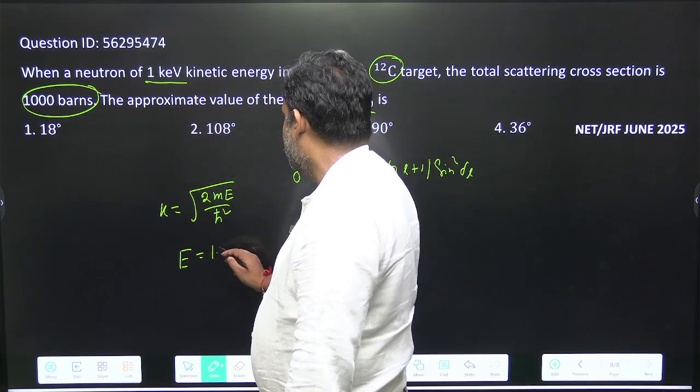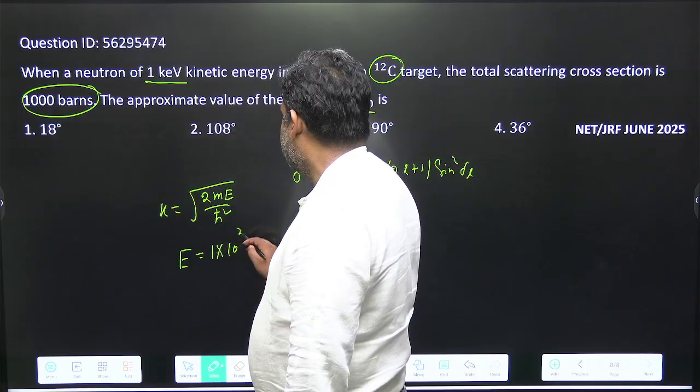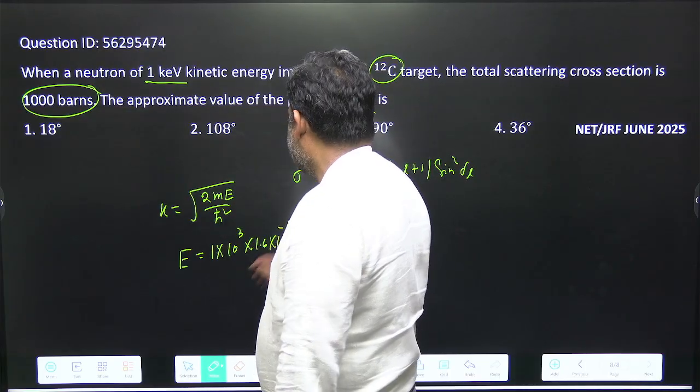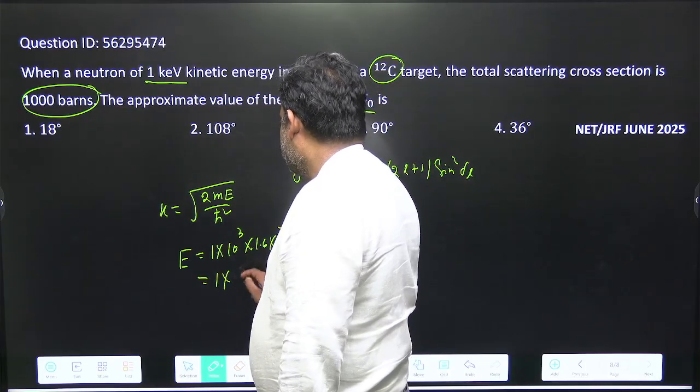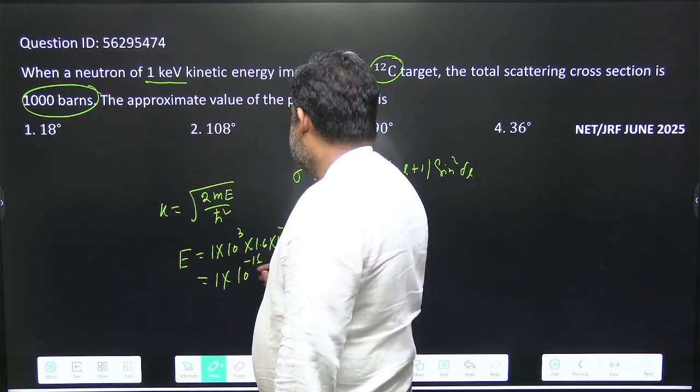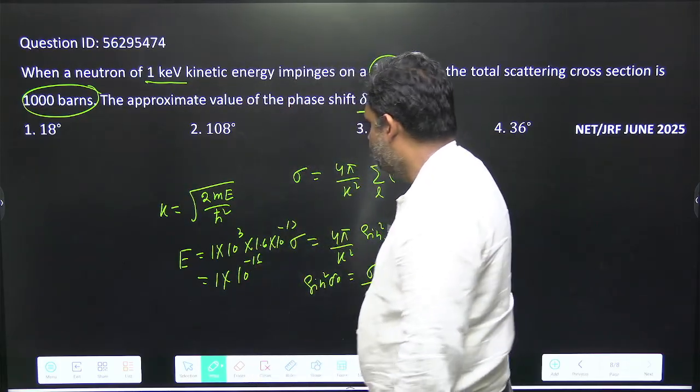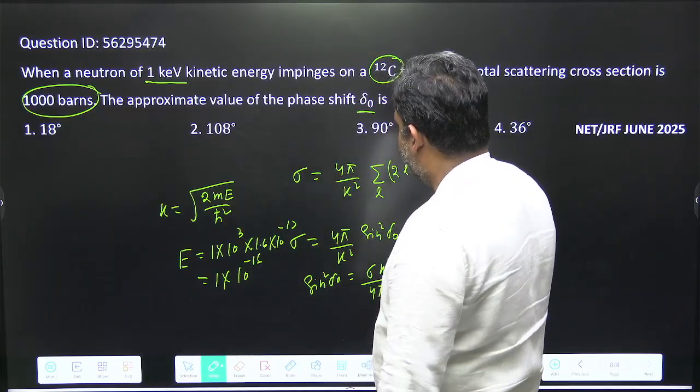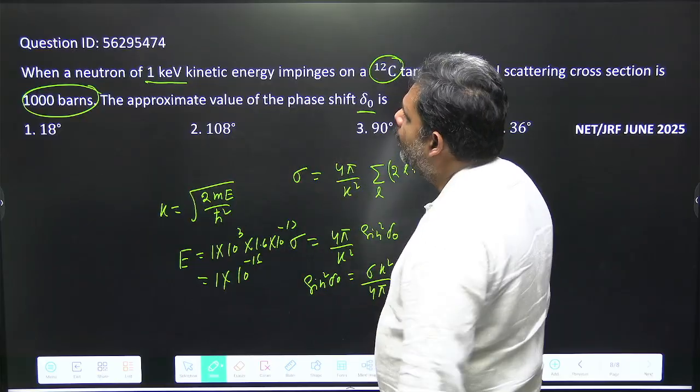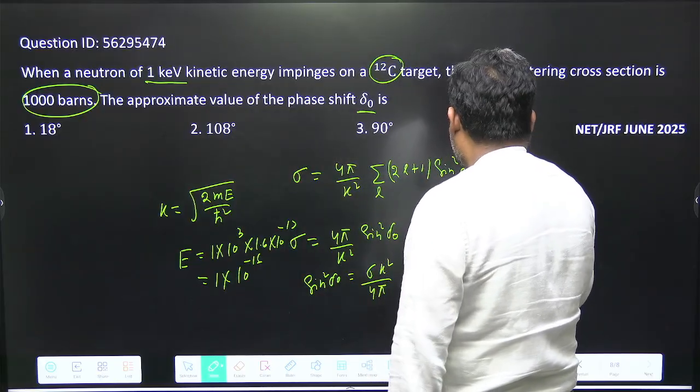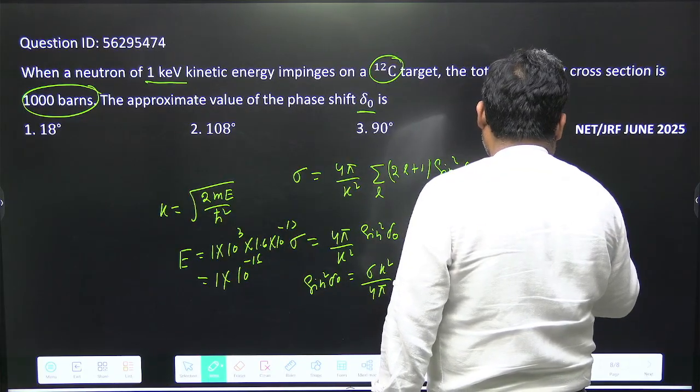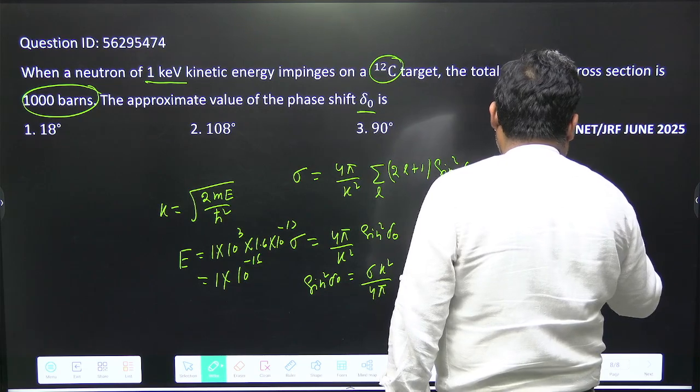This is 1 kiloelectron volt, so 1×10³×1.6×10⁻¹⁹. So this is 1.6×10⁻¹⁶ joules. This is the value of energy and we can put the value of energy. Sigma is 1000 barns. 1 barn equals 10⁻²⁸ meter square.